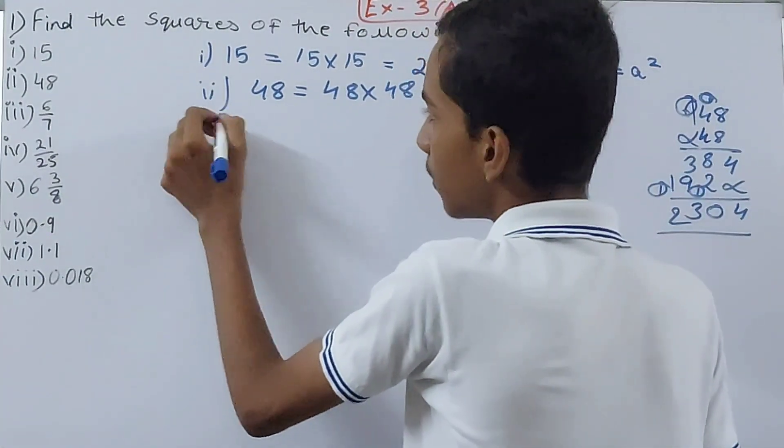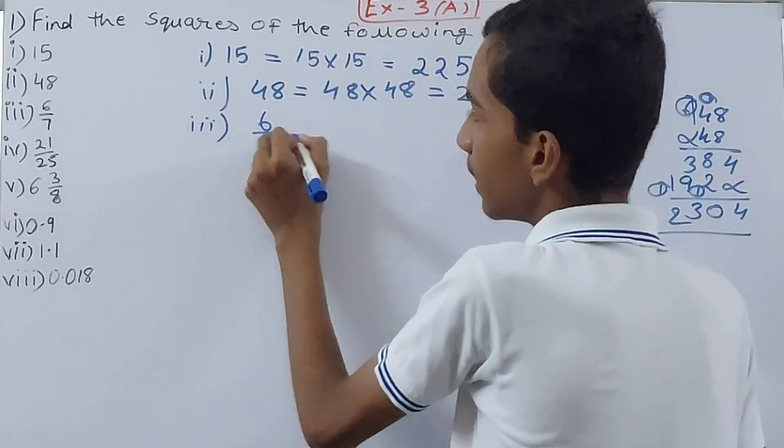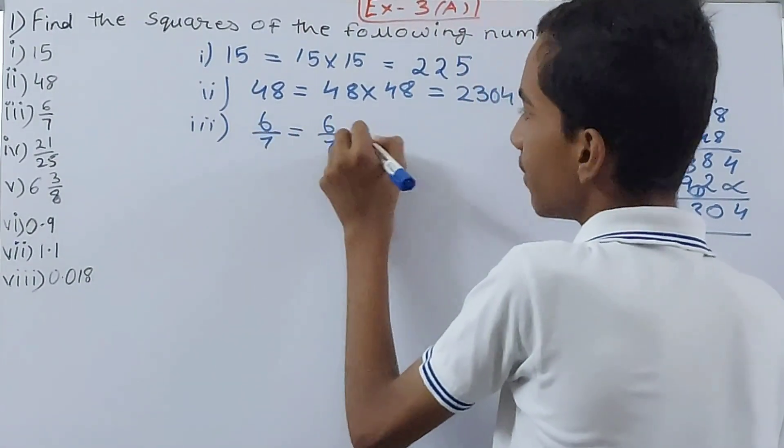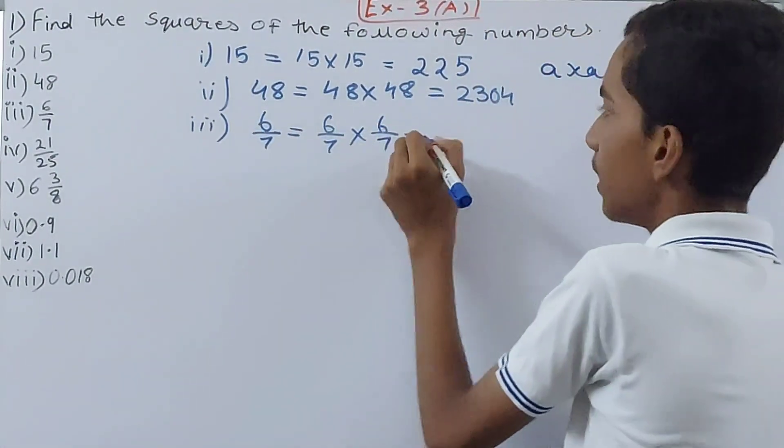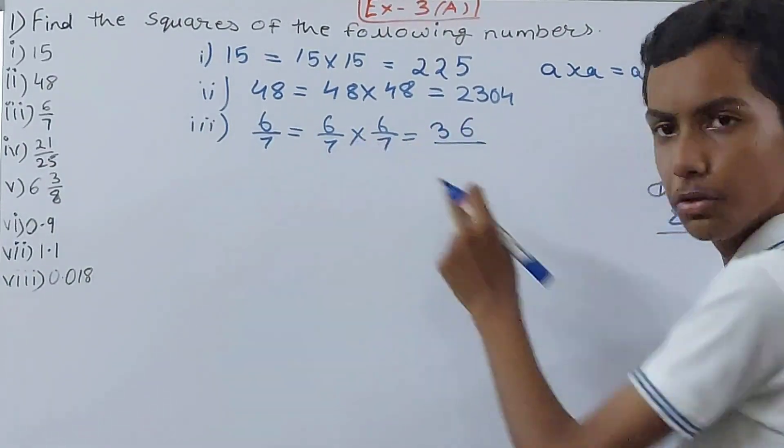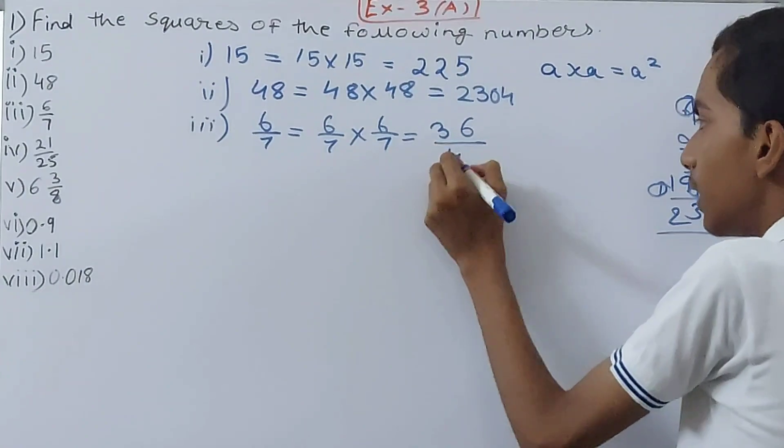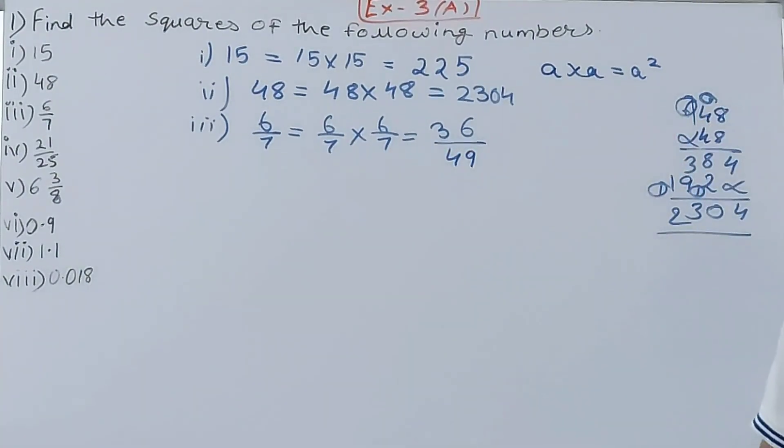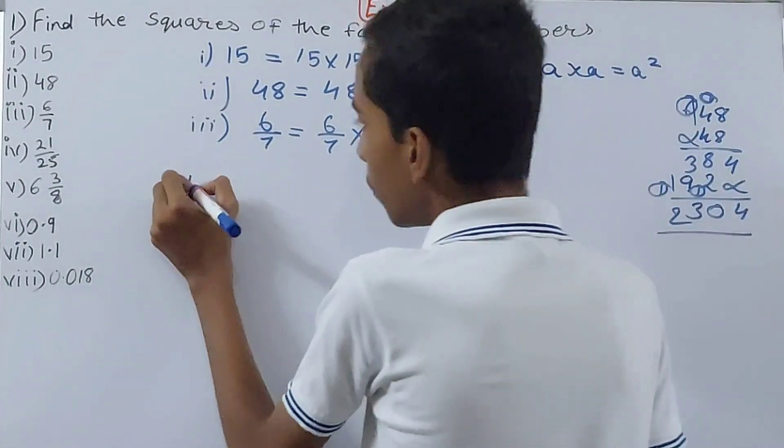Then we have the third one, that is 6/7. That will become 6/7 into 6/7, which is 6 into 6 is 36 upon 7 into 7 is 49. So that becomes your square.